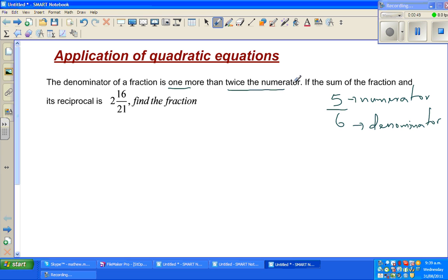So if we say let the numerator be equal to x, what will be the denominator? The denominator is one more than twice the numerator. So twice the numerator would be 2x and one more than that, so the denominator would be 2x plus 1.